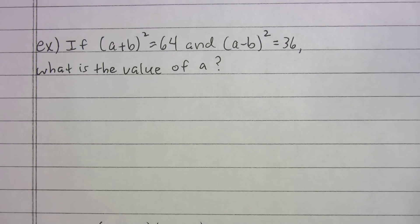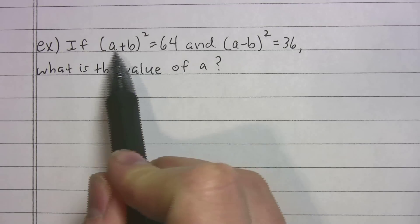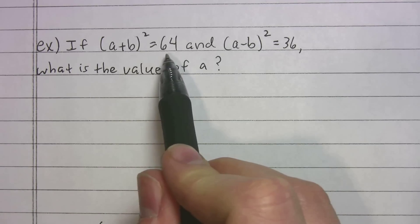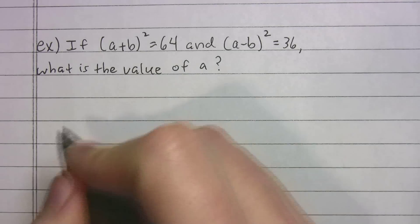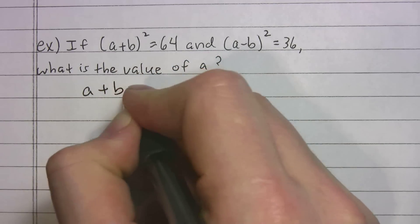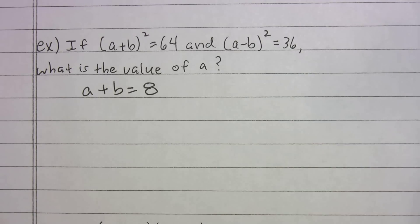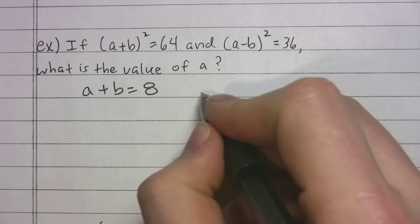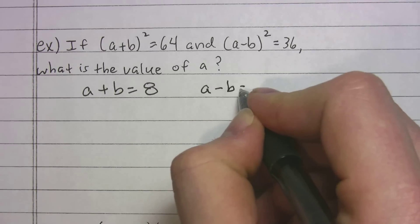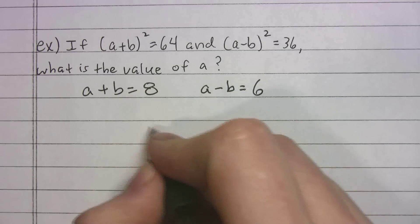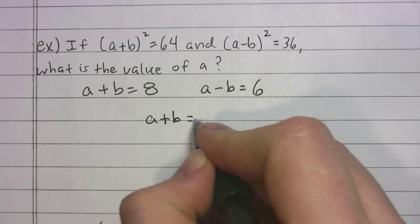Let's try another one. If a plus b squared equals 64 and a minus b squared equals 36, what is the value of a? For this one, it would take a lot of work to expand this whole thing out. So we're not going to do that. But let me ask you this. What squared gives you 64? 8, right? If you said 8, you're the big winner. So a plus b should equal 8. What about 36? What squared gives you 36? Well, if you said 6, pretty obvious, right? That means that a minus b has to equal 6.